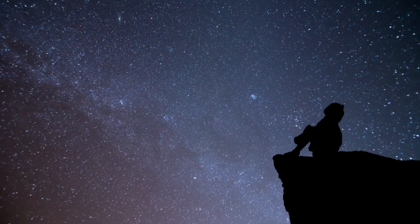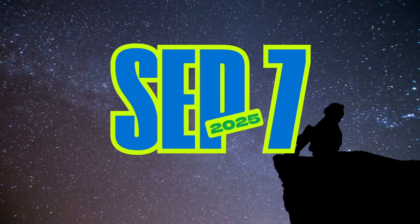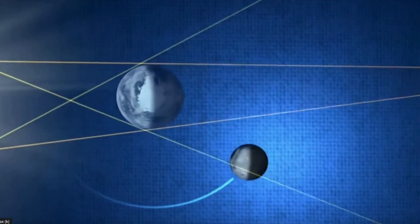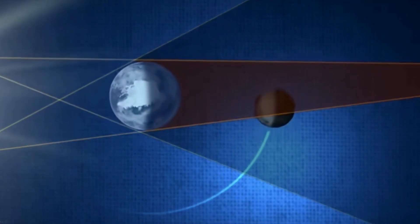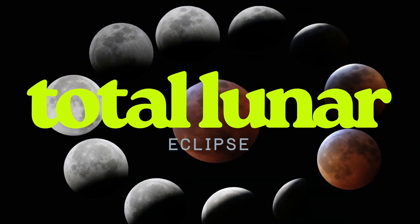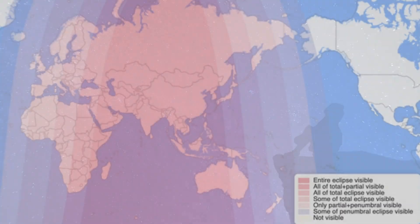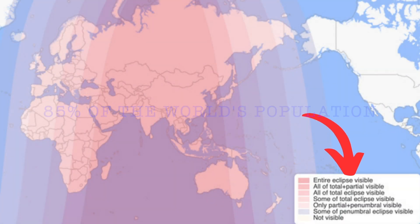Something spectacular is coming to the night sky on September 7th, 2025. For more than an hour, the full moon will slip into the Earth's shadow, turning the lunar disk blood red. It's a total lunar eclipse, and here is the amazing part. Nearly 85% of the world's population has a chance to see it.